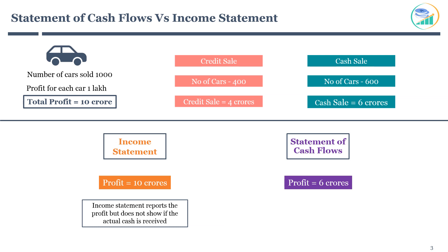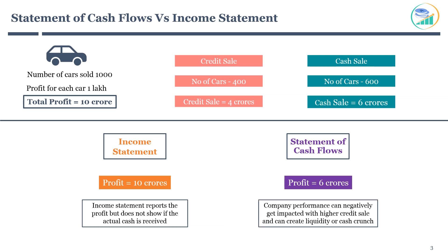The remaining profit will be recorded only when it is received by the company. Company performance can be negatively impacted by higher credit sales, as it can create liquidity or cash crunch. If a company has a loan coming due in the near future, it won't be able to repay due to cash crunch even if there is profit on the income statement. There are several other things income statement does not reflect — such as cash spent on unsold inventory, depreciation and amortization expenses, and capital investment. Hence, it is very important to review the statement of cash flows from the eyes of an investor.